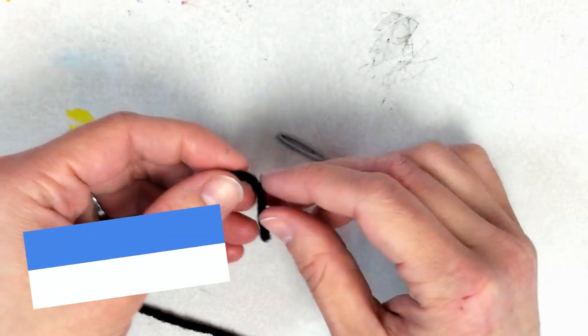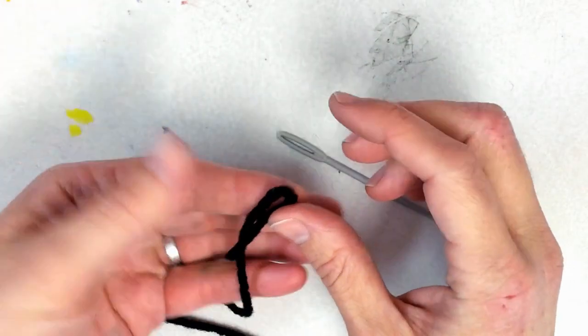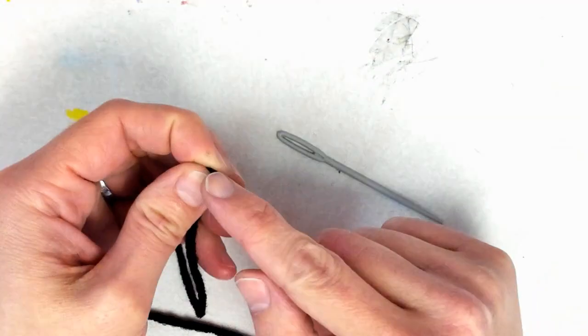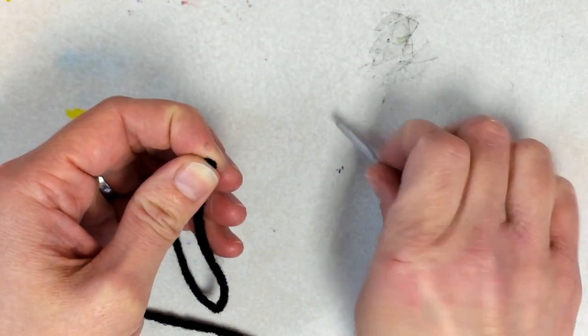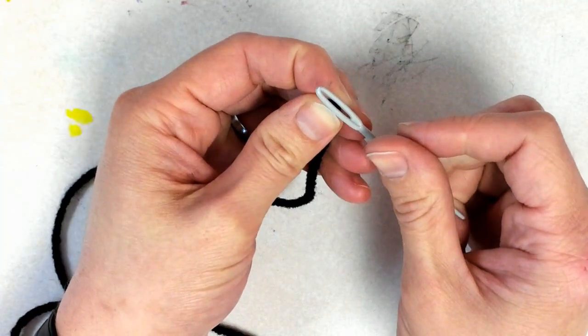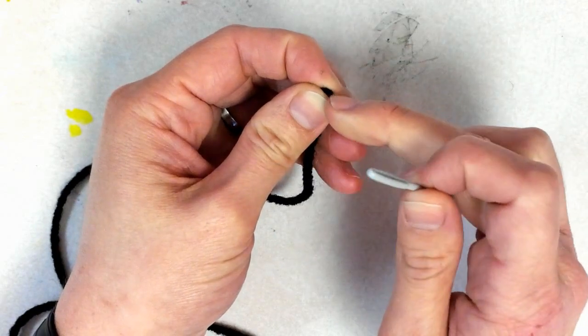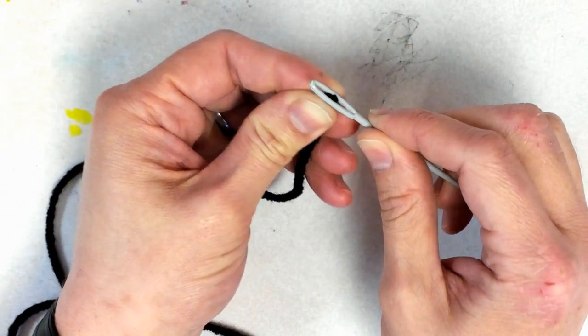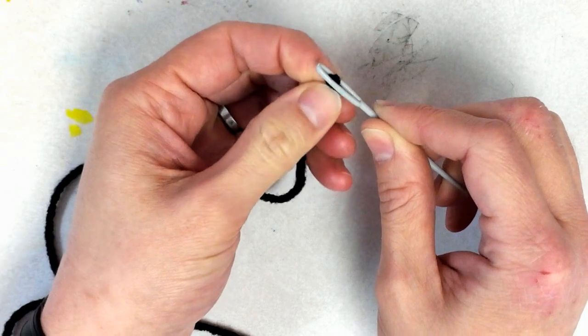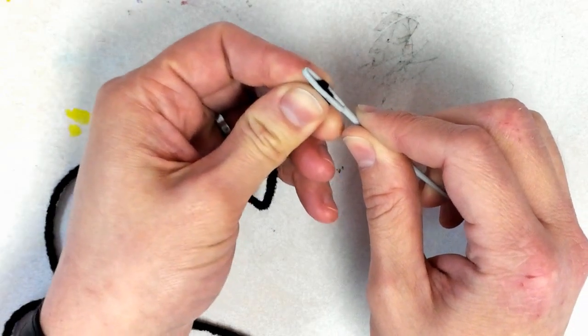So I take the end and I'm going to fold it in on itself and pinch it with my helping hand. Then, with the eye of the needle, I'm going to see-saw it through, I'm going to push it through. So you see it's wiggling through as I wiggle it back and forth.